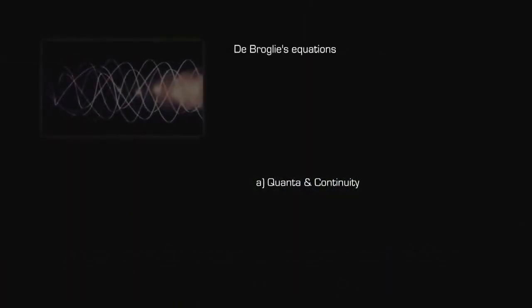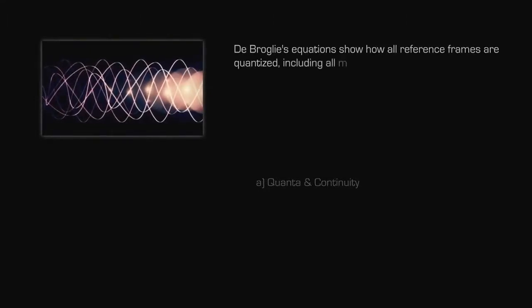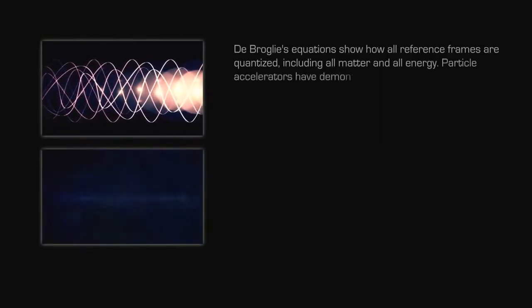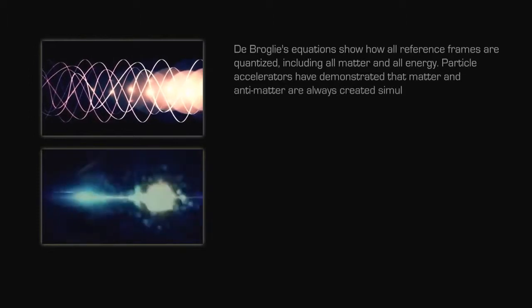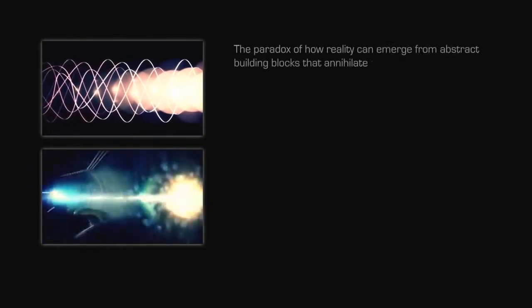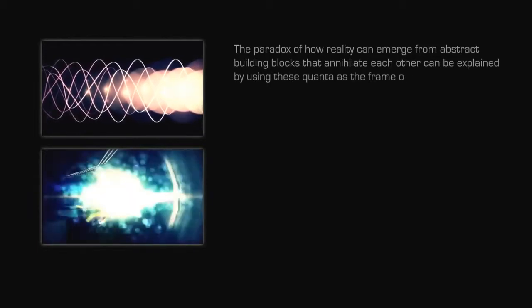De Broglie's equations show how all reference frames are quantized, including all matter and all energy. Particle accelerators have demonstrated that matter and antimatter are always created simultaneously. The paradox of how reality can emerge from abstract building blocks that annihilate each other can be explained by using these quanta as the frame of reference.